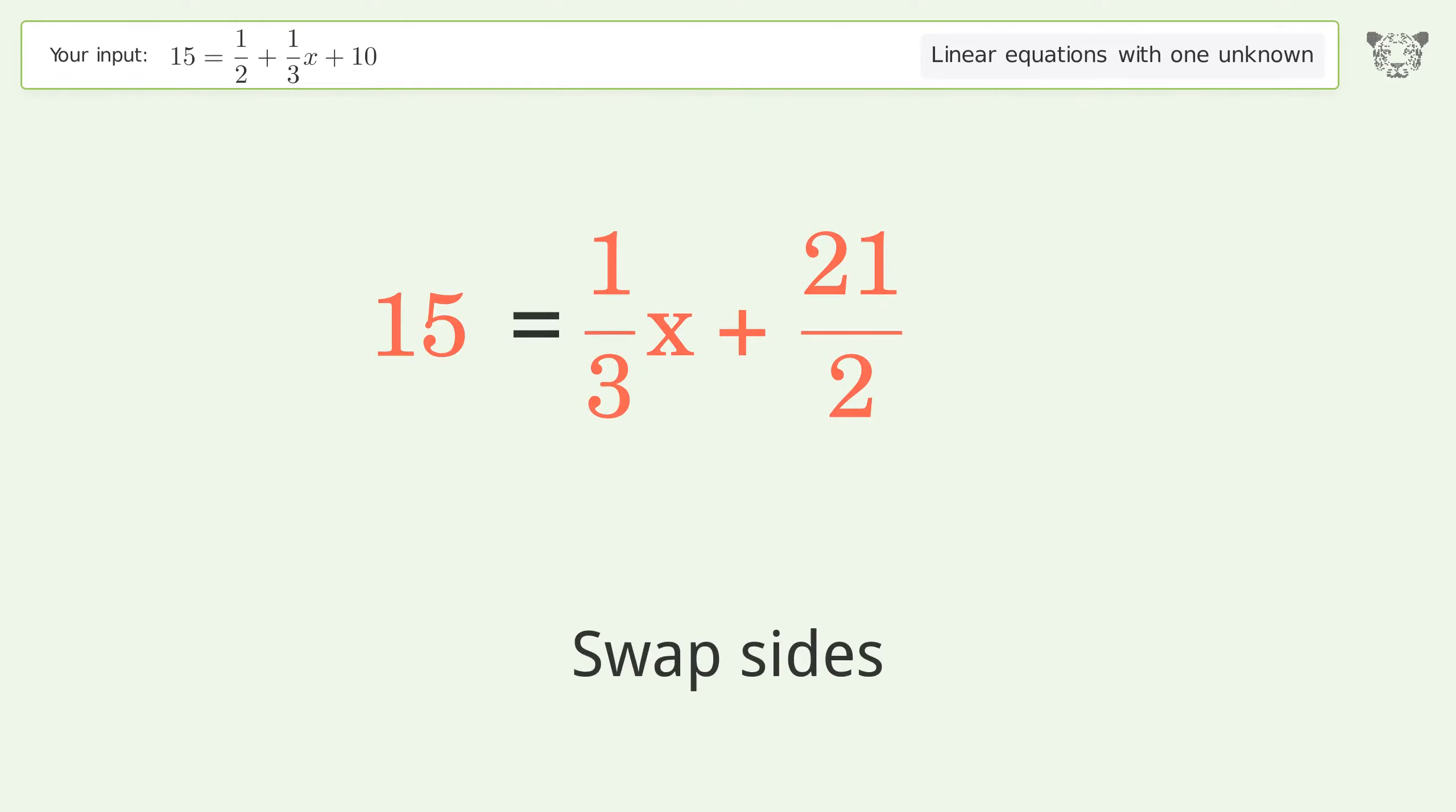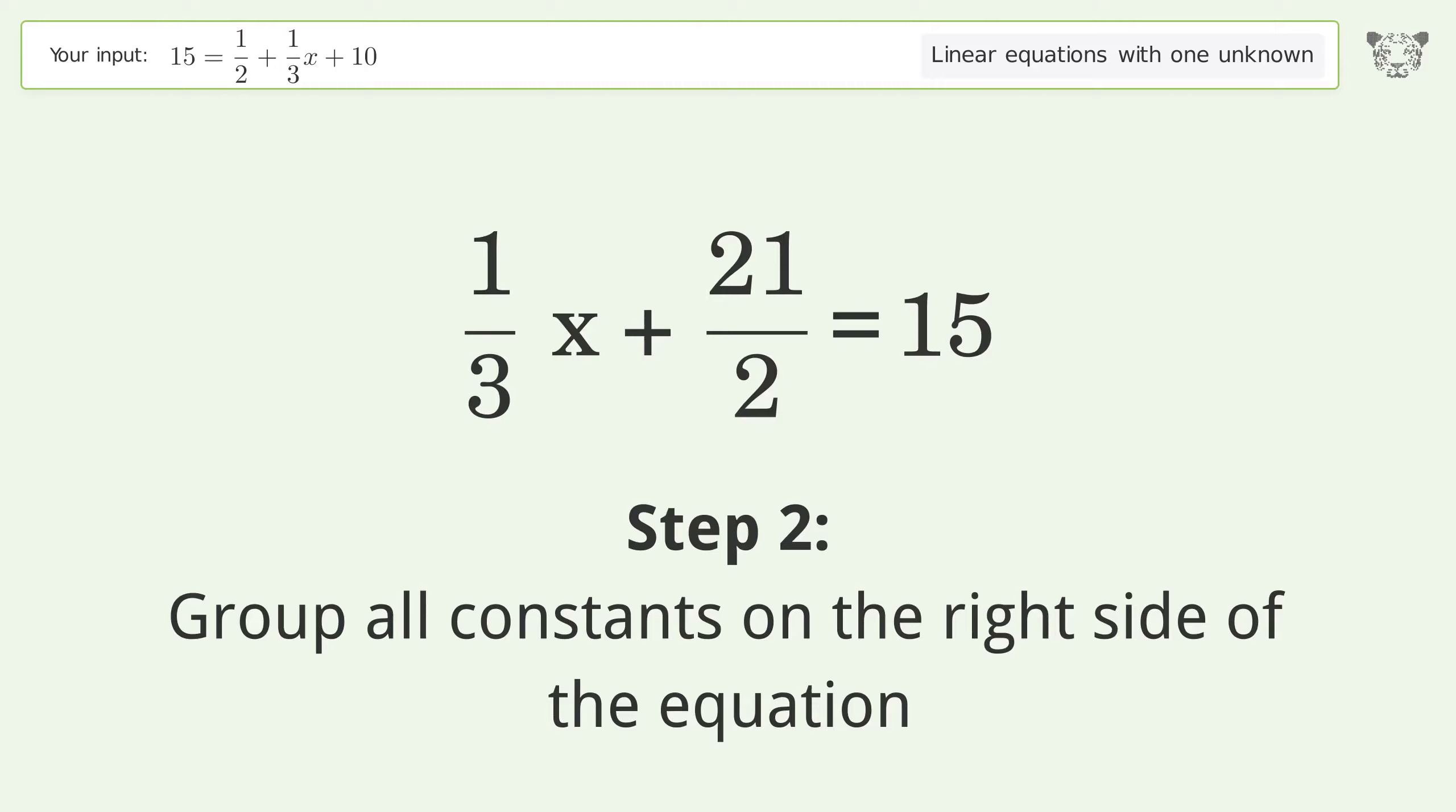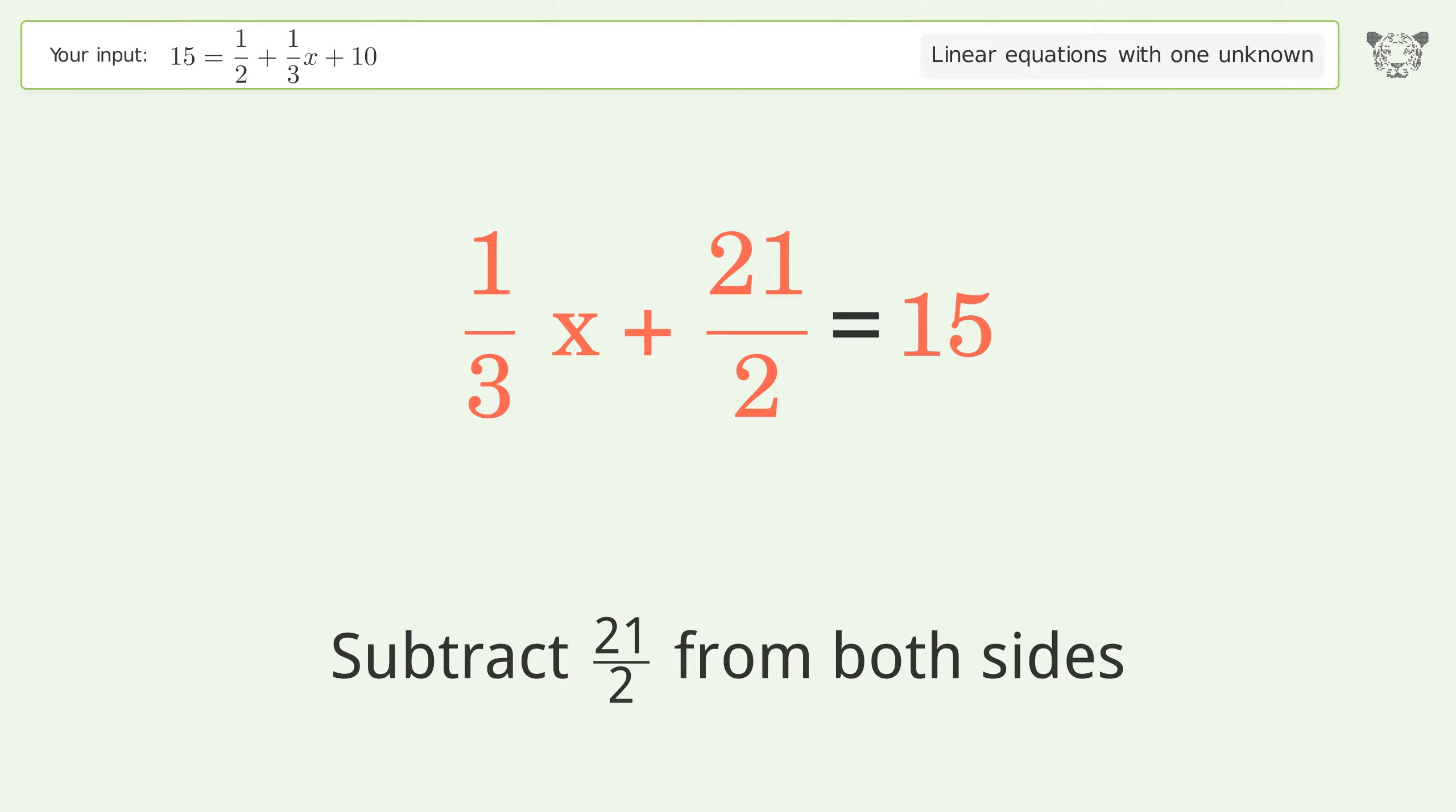Swap sides. Group all constants on the right side of the equation. Subtract 21 over 2 from both sides.